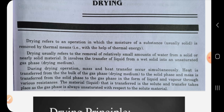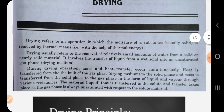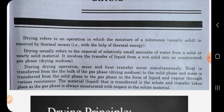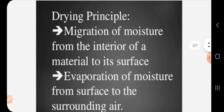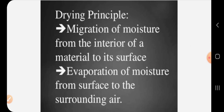The mass is transferred in the form of liquid vapor through various resistances. Transfer takes place as the gas phase is always unsaturated. The basic principles on which drying works are: first, migration of moisture from the interior of a material to its surface — moisture moves from the interior of the solid upward to the exterior surface; and second, evaporation of that moisture from the surface to the surrounding air.